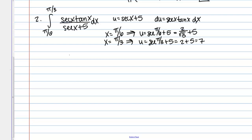Then if I rewrite my integral, it becomes the integral from 2 over root 3 plus 5 to 7 of, well secant x tan x dx is all du, and then I've just got a u in the denominator, so this is just 1 over u du.